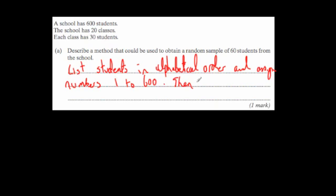Then you can either put the numbers 1 to 600 in a hat and select 60 numbers at random, use the random number button on your calculator until you've got 60 different numbers between 1 and 600, or use a random number table and follow a rule to select 60 numbers between 1 and 600.